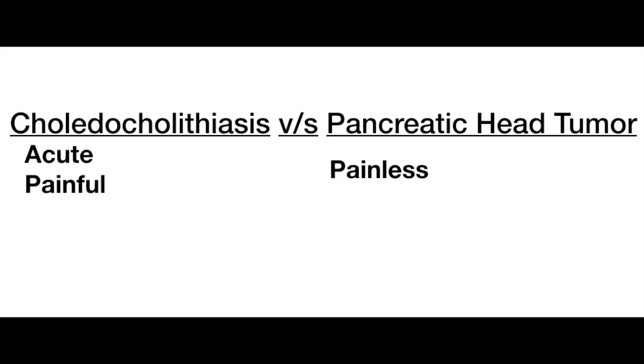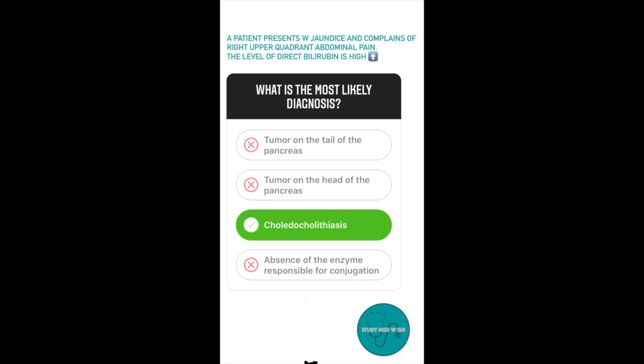Both tumor at the head of the pancreas and choledocholithiasis can obstruct this area and cause jaundice. The key difference is that symptoms of choledocholithiasis would be more acute and will present with pain. Tumor of the head of the pancreas is less likely to present with pain. So, the answer to this question is choledocholithiasis.